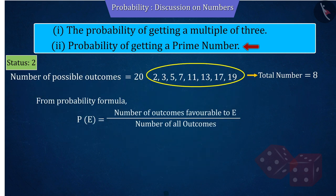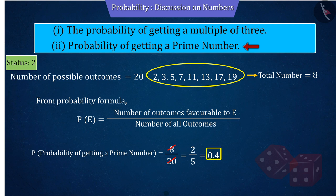Using the probability formula, the number of favorable outcomes of the event is 8 and the number of all possible outcomes is 20. On solving this, the probability of getting a prime number is 0.4.